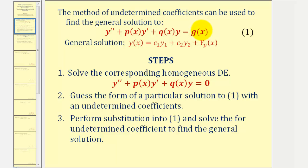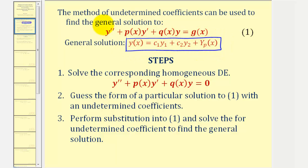In the previous video, we discovered how the general solution to this non-homogeneous differential equation will be in this form here. To use the method of undetermined coefficients, step one is to solve the corresponding homogeneous differential equation. The solutions to the homogeneous differential equation will give us the first two terms of the general solution to the non-homogeneous differential equation. This is sometimes called the complementary function.